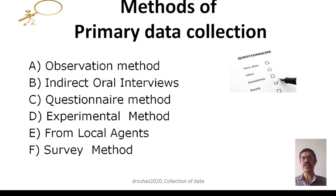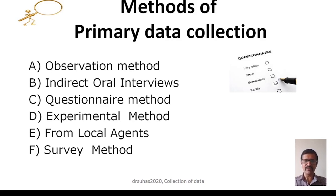There are different methods of primary data collection. Some of the important methods include the observation method, the indirect and direct oral interviews, the questionnaire method, the experimental method, various local agents, and survey methods.